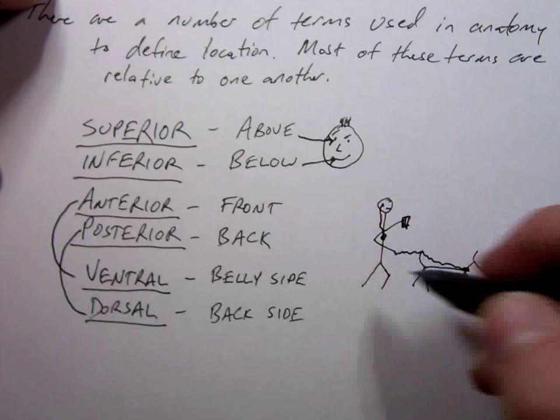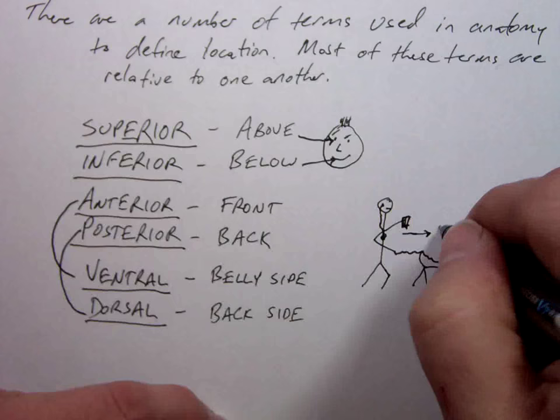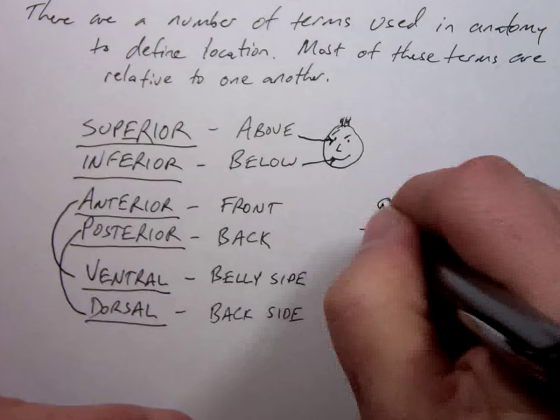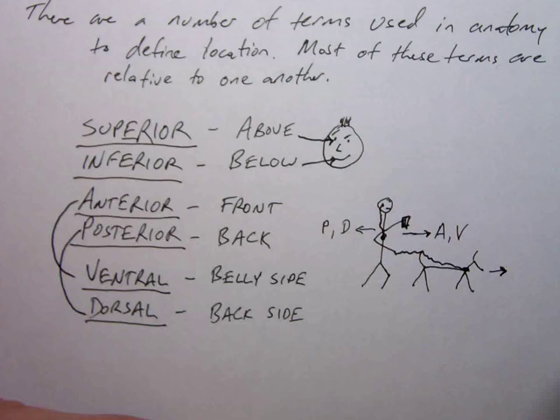For stick dude, this side is both what? Anterior and what? Ventral. For stick dude, this side is both? Posterior and dorsal. Posterior and dorsal. This side is? Anterior. Anterior. And that's it.